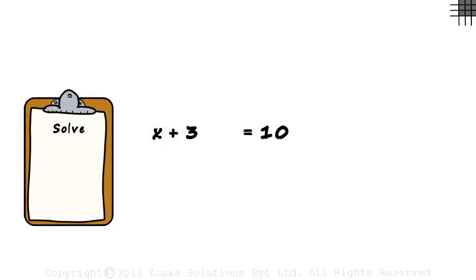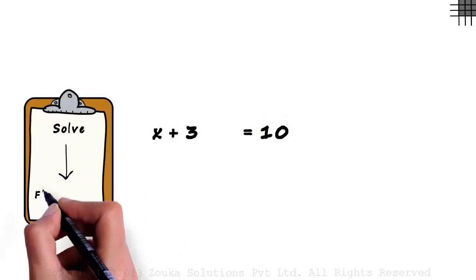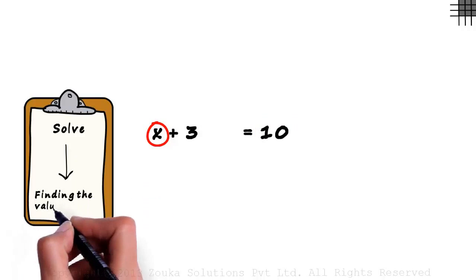By satisfies, I mean a value of the variable that equates the left-hand side and the right-hand side. So our aim in linear equations is mainly to find the value of this variable x.